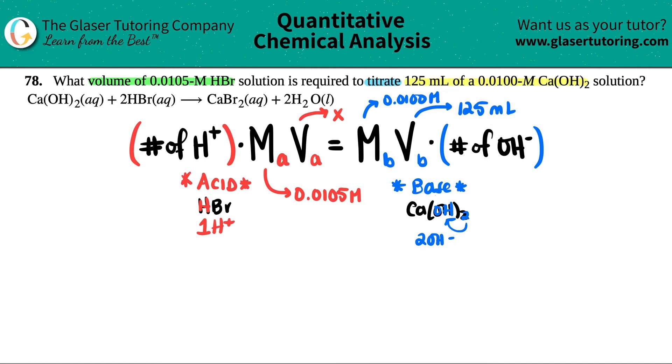Let's plug it in. So I'm going to start from left to right. I'm going to show you that we're going to multiply it by one H plus. And then the molarity is 0.0105 times X equals, now the base side. The molarity is 0.0100. The volume is 125. And we're just going to multiply that by two for the two OHs.